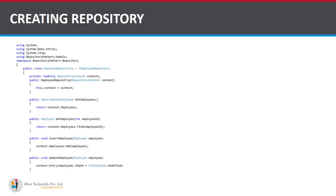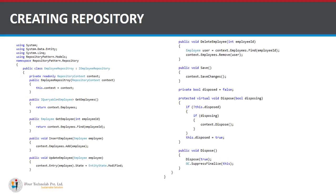Step 3 — create a class EmployeeRepository that implements all the methods of the interface using Entity Framework. This is where the DbContext class MvcEntities is used. In public class EmployeeRepository, inherited from IEmployeeRepository, the logic is: GetEmployees returns a list of all employees, GetEmployeeById finds the employee by ID, InsertEmployee uses the Add method, UpdateEmployee uses EntityState.Modified, DeleteEmployee finds the employee by ID and removes it, then saves changes.